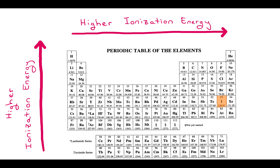Iodine is here. Just above it is chlorine, and in between is bromine. Because iodine is the farthest down, it has the lowest ionization energy. And because chlorine is the highest up, it has the highest ionization energy.